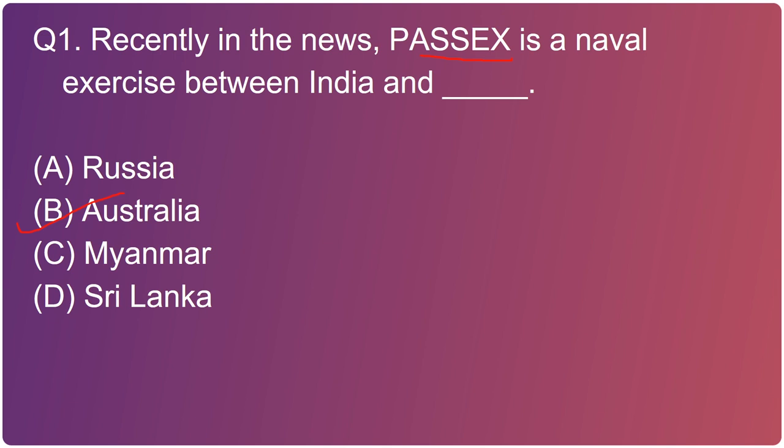India and Australia started a two-day naval exercise PASSEX in the Eastern Indian Ocean region from September 23rd. It involved complex helicopter operations, naval maneuvers, and aircraft drills. The stealth frigate INS Sahyadri, air warfare destroyer HMAS Hobart, and missile corvette INS Karmuk engaged in the maritime exercises.